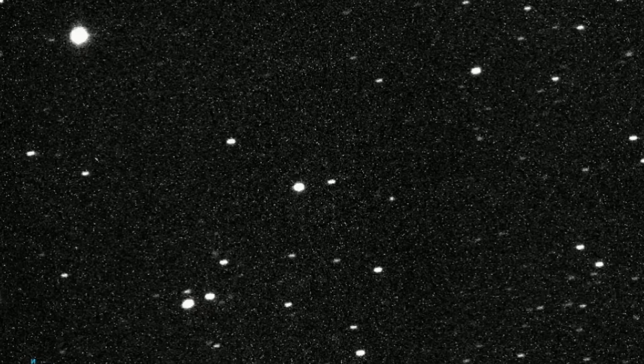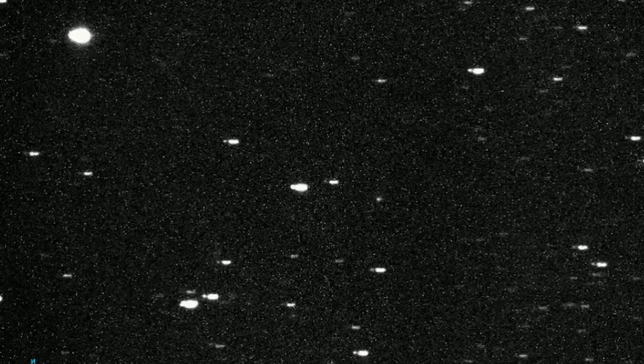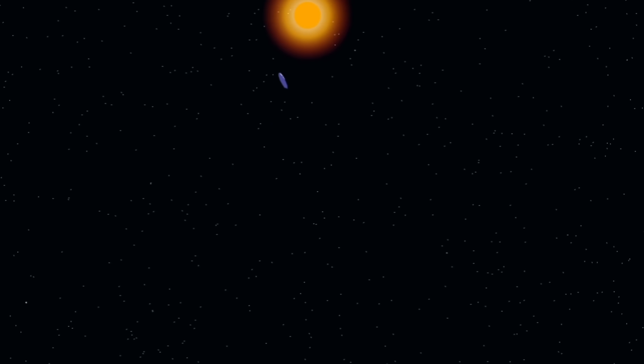Astronomers have just spotted something really strange moving through our solar system, and it seems to be coming our way. This mysterious object is believed to have come from outside our solar system, making it possibly only the third known interstellar visitor ever discovered.